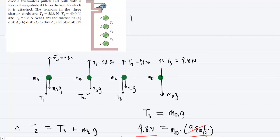We're going to set the magnitude of T1 which is upward equal to the magnitude of T2 plus the gravitational force which are both downward. We know T1 was 58.8 newtons and then T2 we know was 49 newtons plus the unknown mass of disk B times 9.8 meters per second squared.